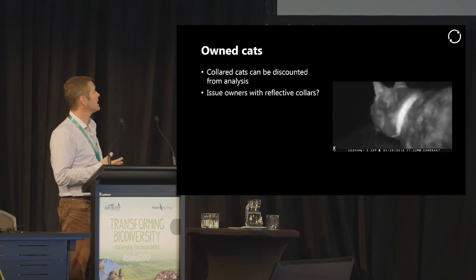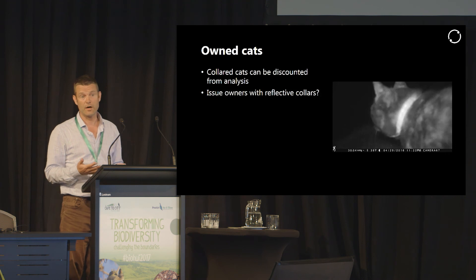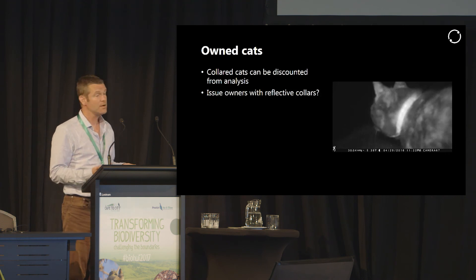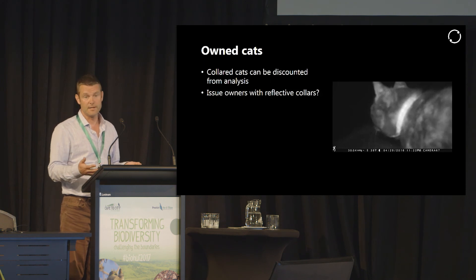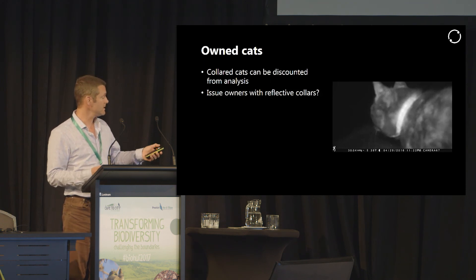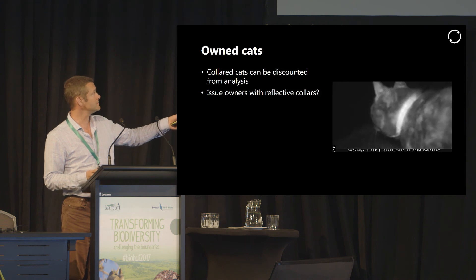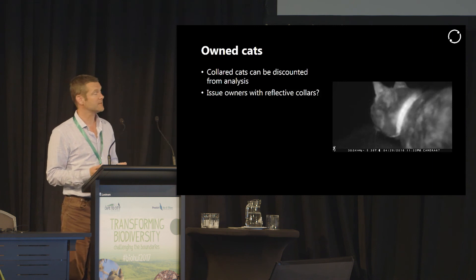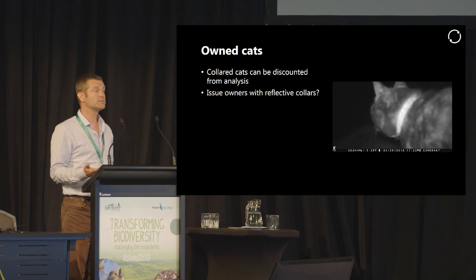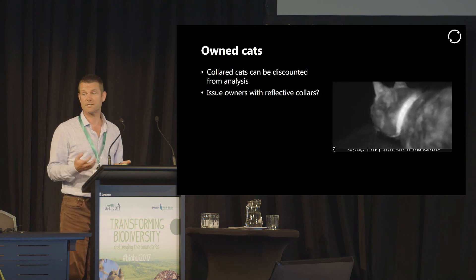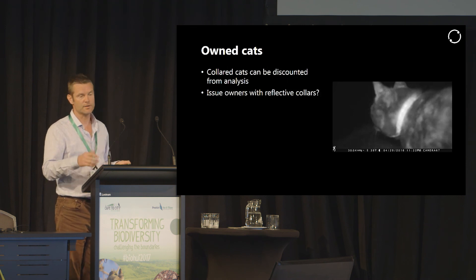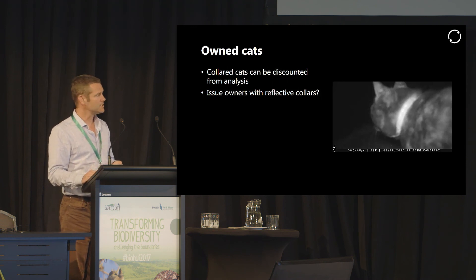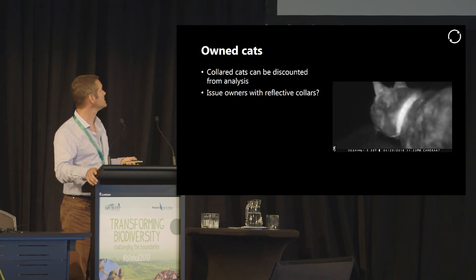One other complication is that people have owned cats in Cape to City. We're not trying to remove people's owned cats, so we don't want to count them in our index of feral cat abundance. This is a photo from the Cape to City footprint — you can see that cat's wearing a collar. So as long as we ensure that people have their owned cats wearing a collar, we can make sure they're not counted in the index, and we're not issuing people with an infringement for having cats on their property when in actual fact it was just a pet.